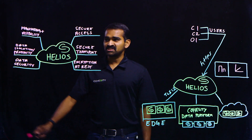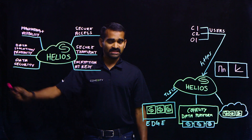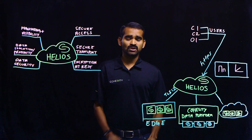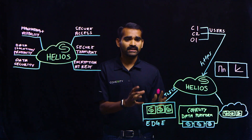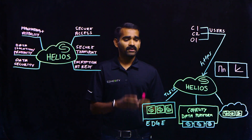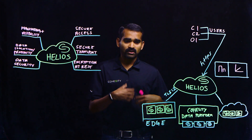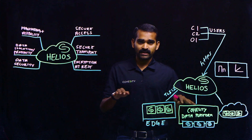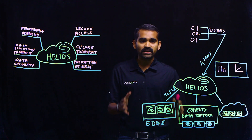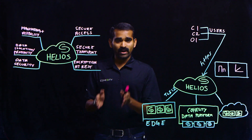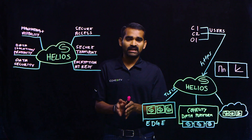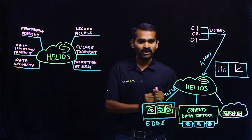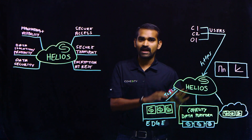Let's move on to the next one, which is data isolation and proximity. Helios is a multi-tenant environment, so it's very critical to segregate the data. The way we do that is through authorization and indexing. We segregate the data at any point in time — customer one's data will never be leaked into customer two's data. We take care of that through authorization and indexing.